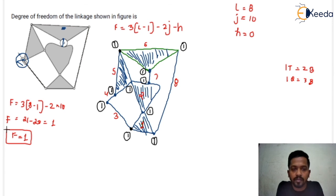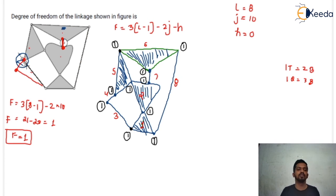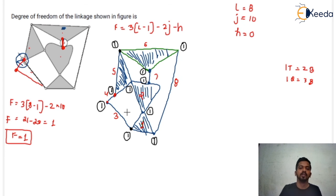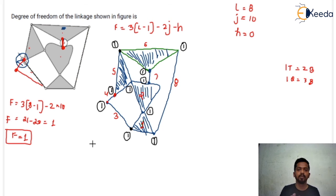I hope you get the solution to this question. The important points: this roller connects this link and this link, so I can write it as one link. This slider connects this link and this link, so I can write it like that. So that would be the conversion of the roller and the slider — you can see in this diagram it is easy to understand. You just have to calculate the number of links and number of joints; first make the diagram easy, then it will be easy to count the number of links and binary joints.